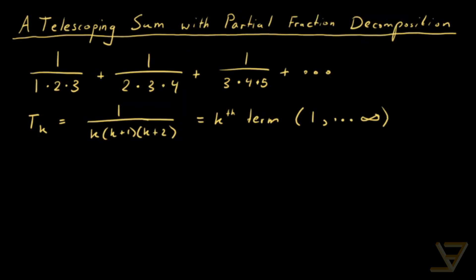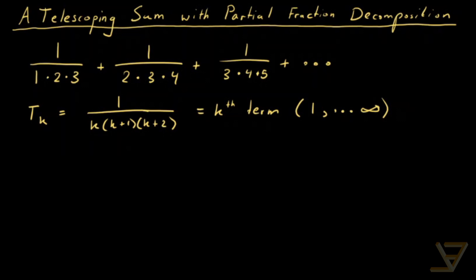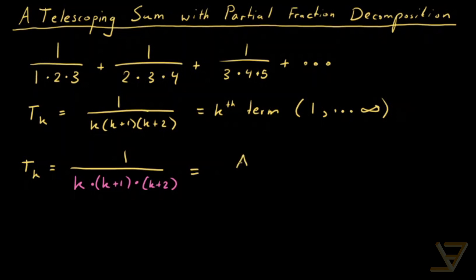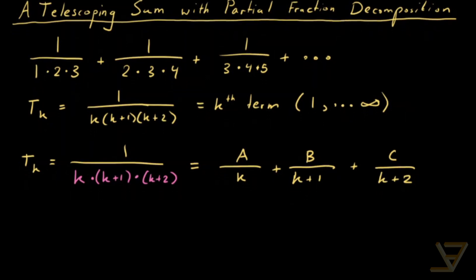Now there is a clever way to decompose this, and I'll show it to you at the end. But I want to go for pure partial fraction decomposition first. What I mean is: we have 1 over k(k+1)(k+2), and we're going to try to write this as A over k plus B over (k+1) plus C over (k+2). We're going to find what A, B, and C are, because this simplifies our problem.